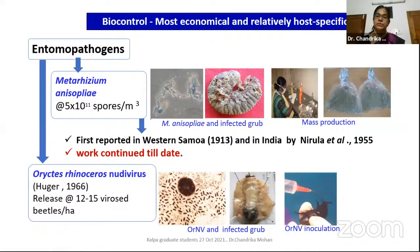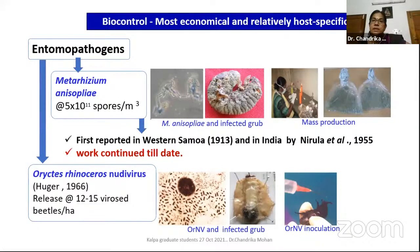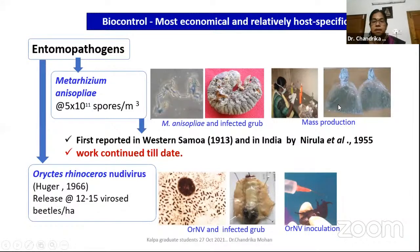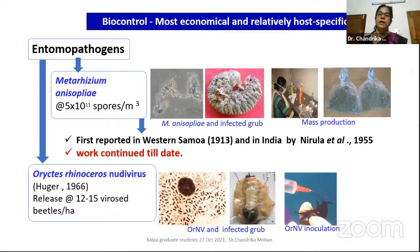Two entomopathogens are used: Metarhizium anisopliae and Oryctes rhinoceros nudivirus. Metarhizium anisopliae is known as green muscardine fungus. The spores are dumbbell-shaped and form chain structures. We have developed a farmer-participatory production technology in rice or jar-based grain media, empowering farm women to produce locally and apply in breeding sites. Metarhizium was first reported in 1913, and in India, the first detailed observation was by Dr. Nirula et al. in 1955. The same Metarhizium isolate is 100% effective even now with no resistance or strain difference.